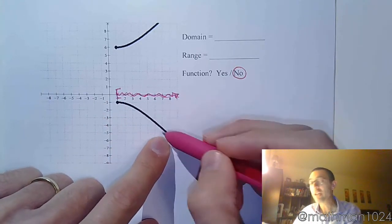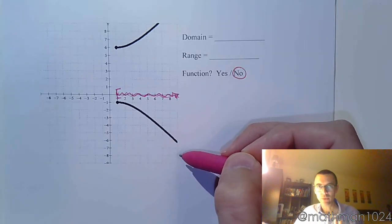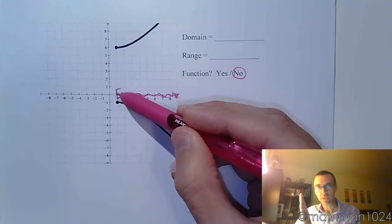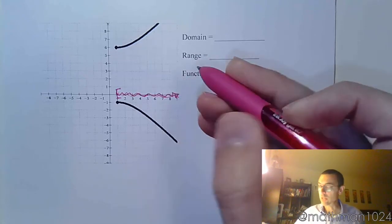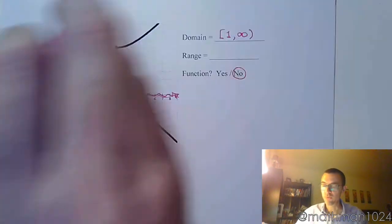Now, don't get thrown off and say, oh, but he goes down. Domain does not go down. Domain goes left to right. So he goes left from 1 to infinity. Alright? Both of these guys do. And so it's just bracket 1 to infinity.